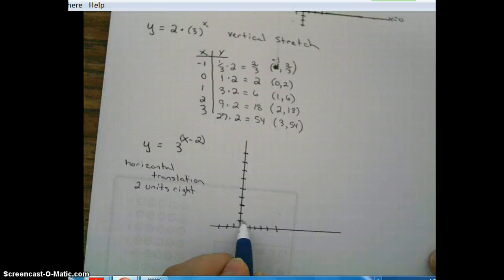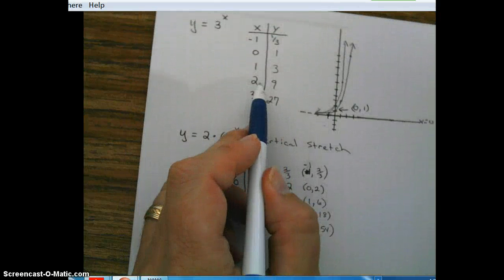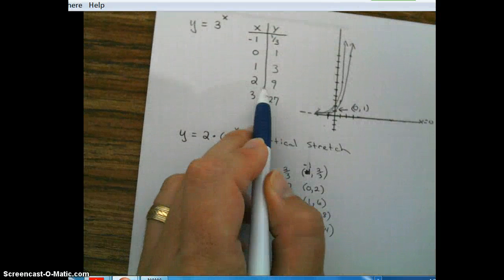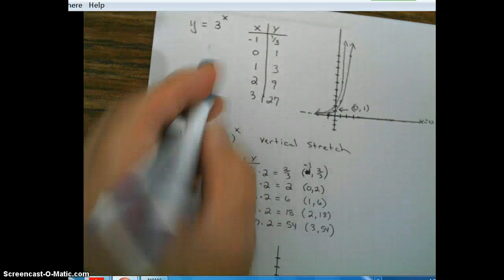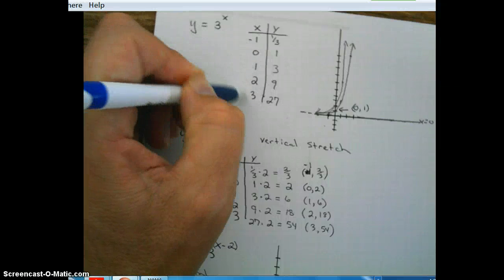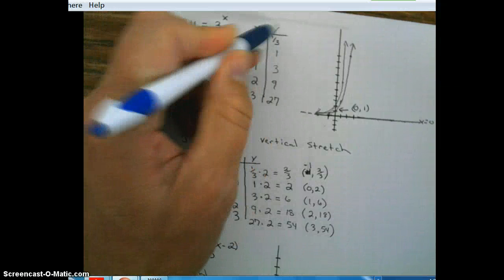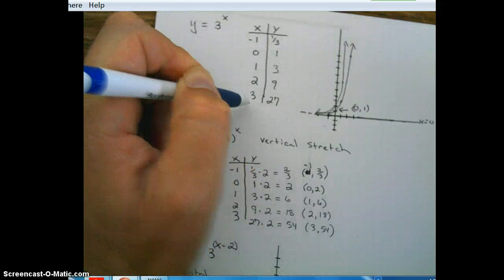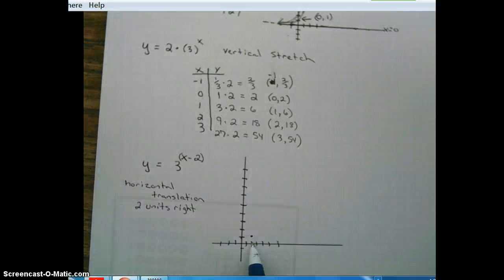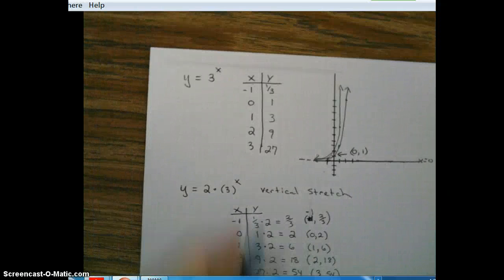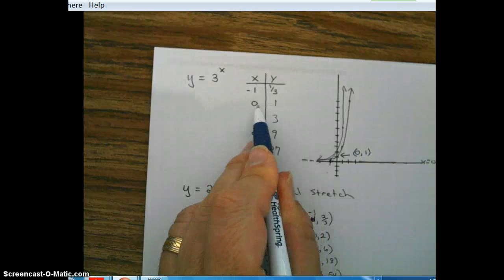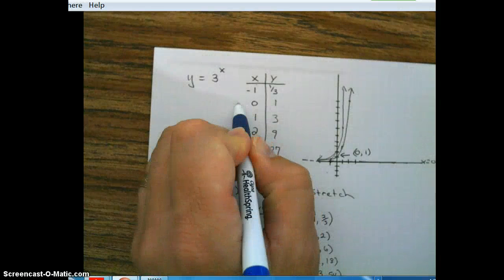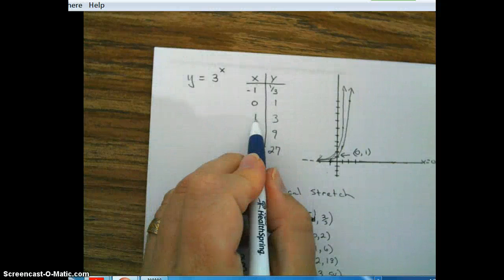So from our parent, 0, 1, we go 2 units to the right. So 1, 2. Basically, all these points right here are moved 2 units to the right. Okay? Which means we're affecting the x-coordinates. The y-coordinates are all staying the same. The x-coordinates are all moving 2 units to the right. So notice we're at 2, 1. Okay? So our 0, 1, since it got moved 2 units to the right, 0 plus 2 is 2. 2, 1. So this one would be 1 plus 2.